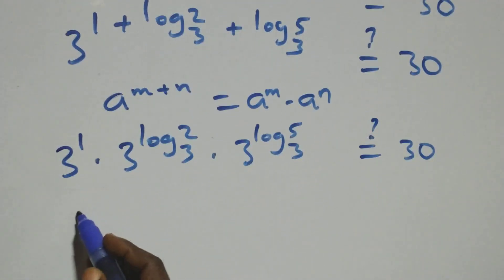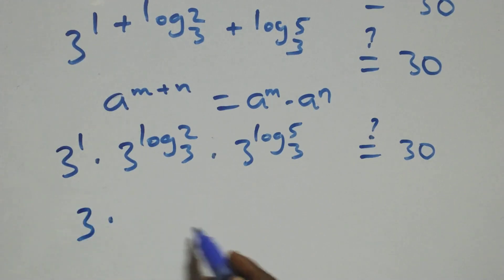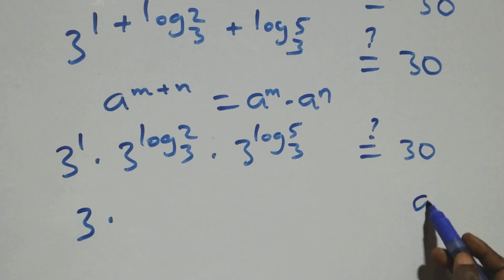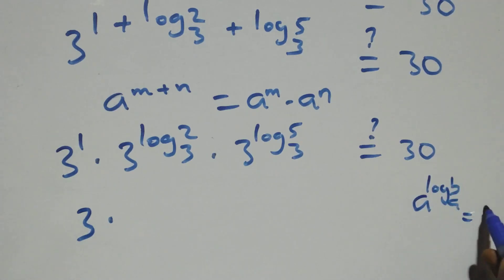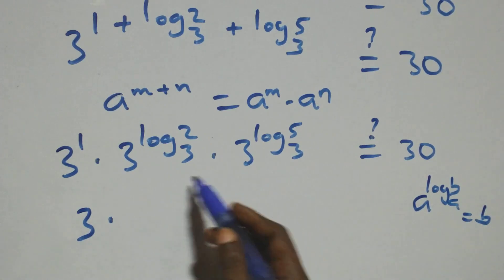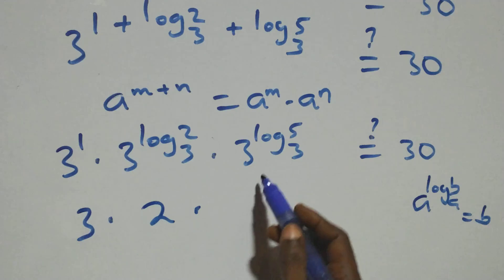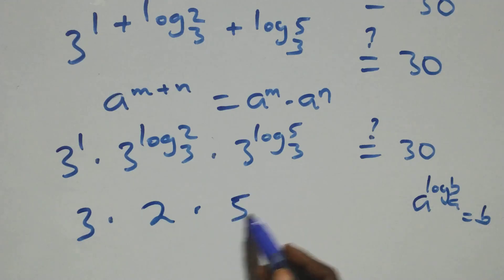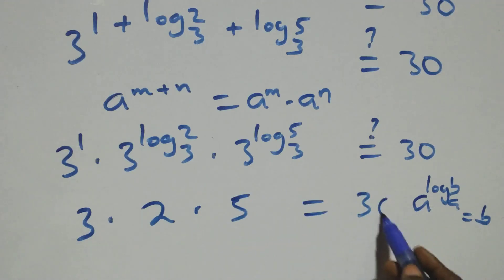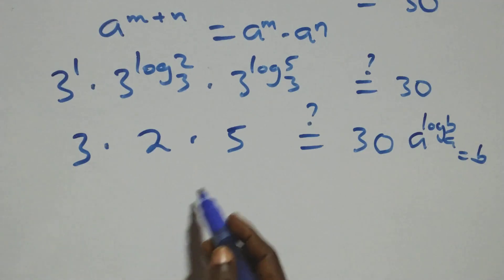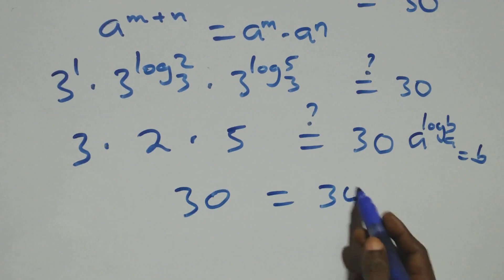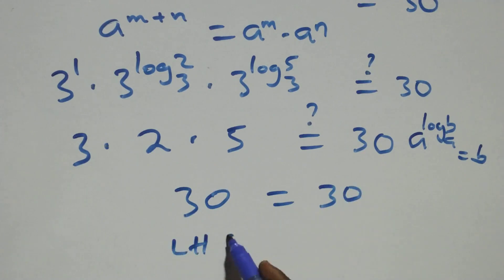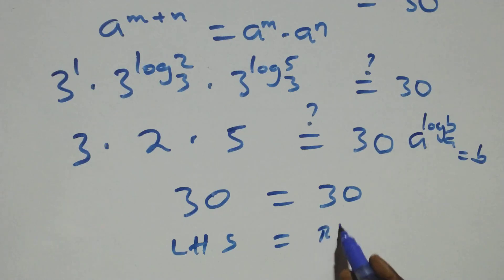So 3 times 2 times 5 equals 30, which equals 30 on the right-hand side. The left-hand side equals the right-hand side, confirming the solution is correct.